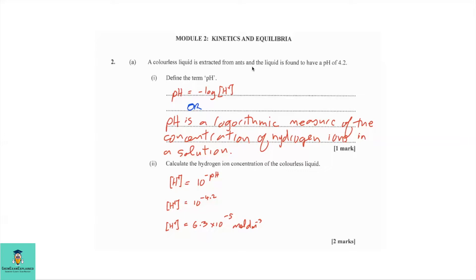Question 2a: A colorless liquid is extracted from ants and is found to have a pH of 4.2. Part one — define the term pH. You could define it using the formula or using words. With the formula, pH is equal to minus log of the H⁺ concentration. Or: pH is a logarithmic measure of the concentration of hydrogen ions in a solution.